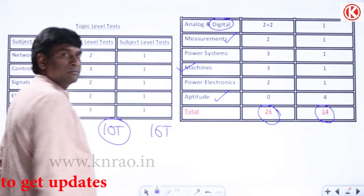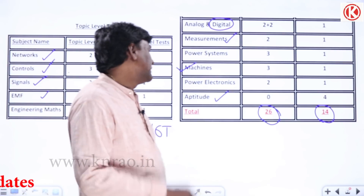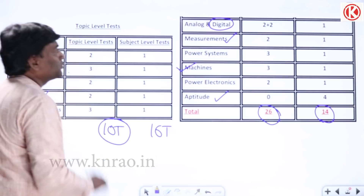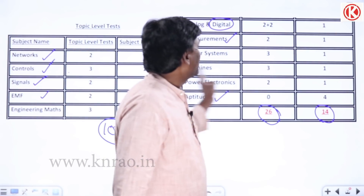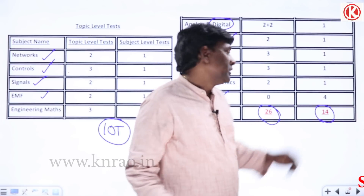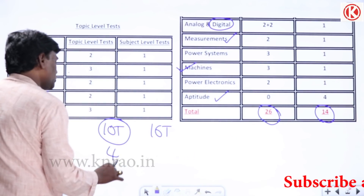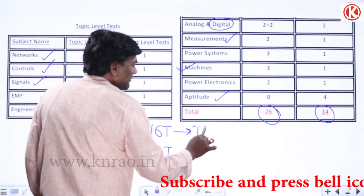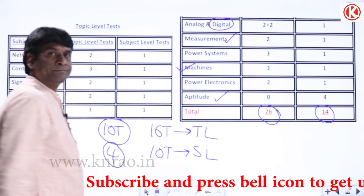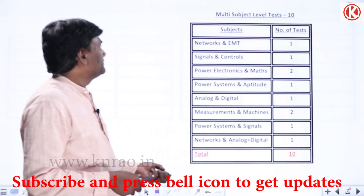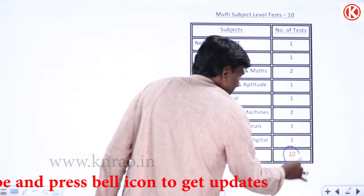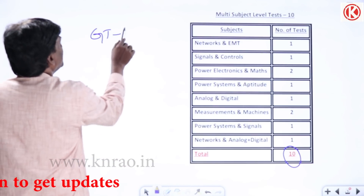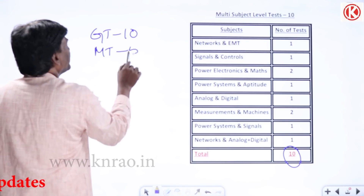Out of 14 subject-level tests: mathematics is 1, analog and digital combined is 1, power systems is 1, and power electronics is 1 — so 4 tests are planned for later, and the remaining 10 tests we are going to take. Then there are multi-subject level tests — we are going to conduct 10 of those — followed by 10 grand tests and 5 mock tests.